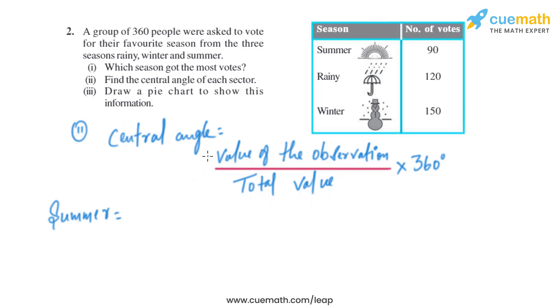Let's start with summer season. If we look into the number of votes, it is 90 divided by the total number of votes, that is 360, multiplied by 360 degrees. On solving, we will get 90 degrees.